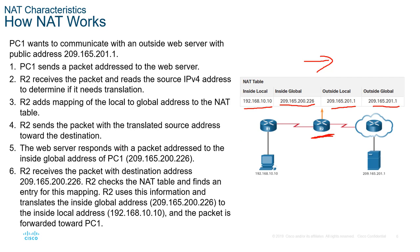The web server responds with the inside global address. R2 receives the packet, checks the NAT table, corrects it from inside global back to inside local, and forwards it appropriately. This is something your home router does automatically. At home, you may have a 192.168 or 10.x network. When you go on the internet, all of your addresses get translated to your inside global address. That's why if you Google 'what is my IP address' from any device on your internal network, they all show the same IP — you're seeing your global address from the internet's perspective.